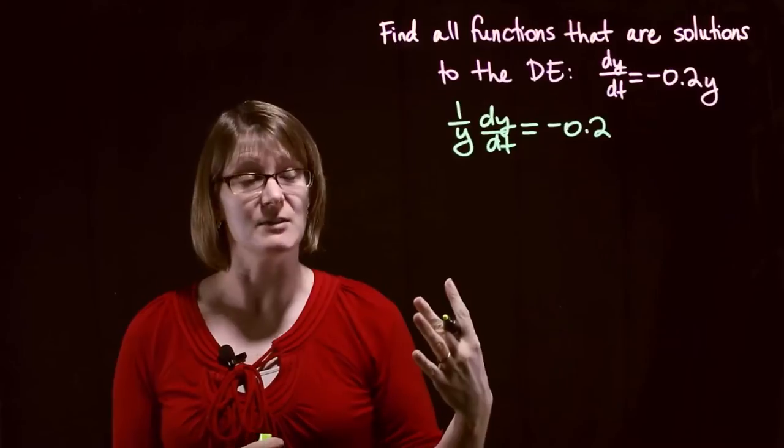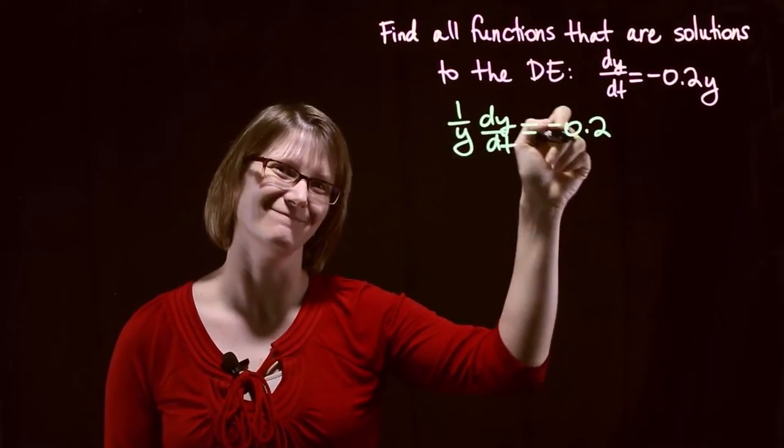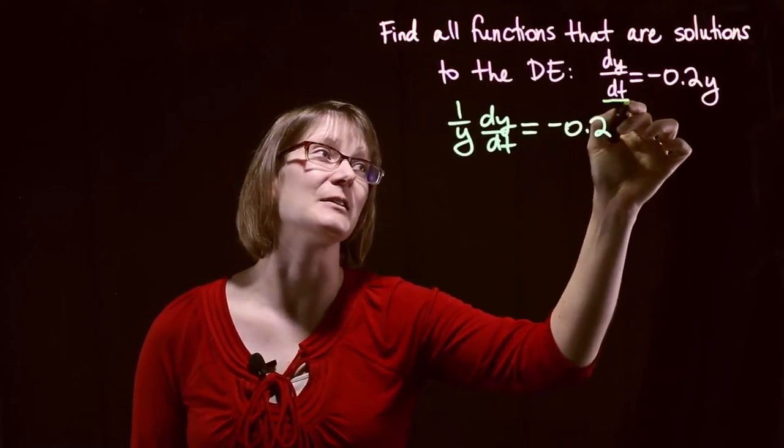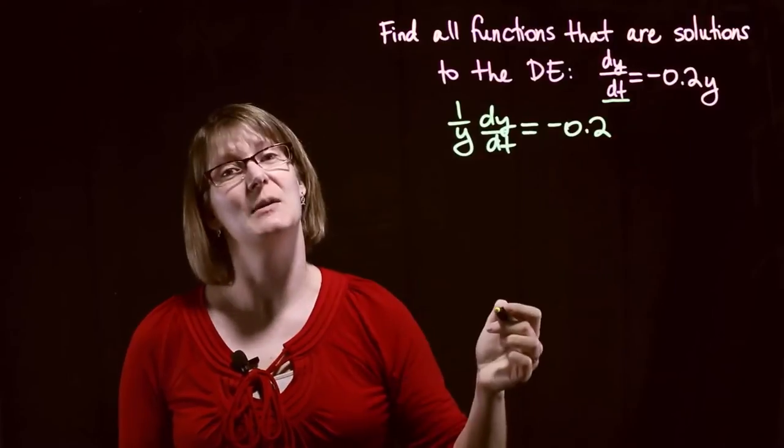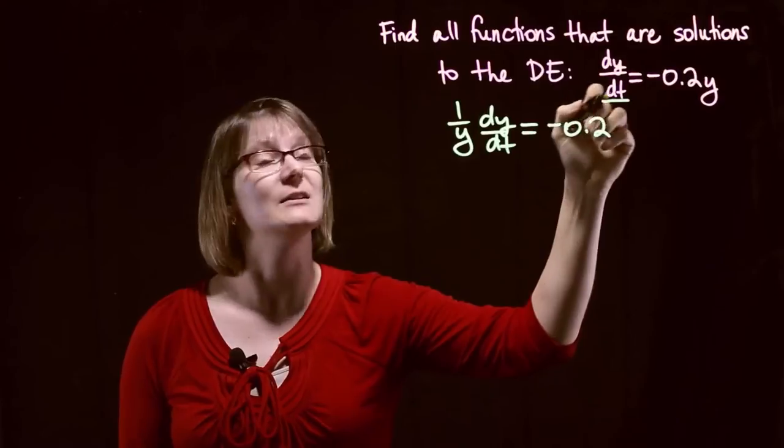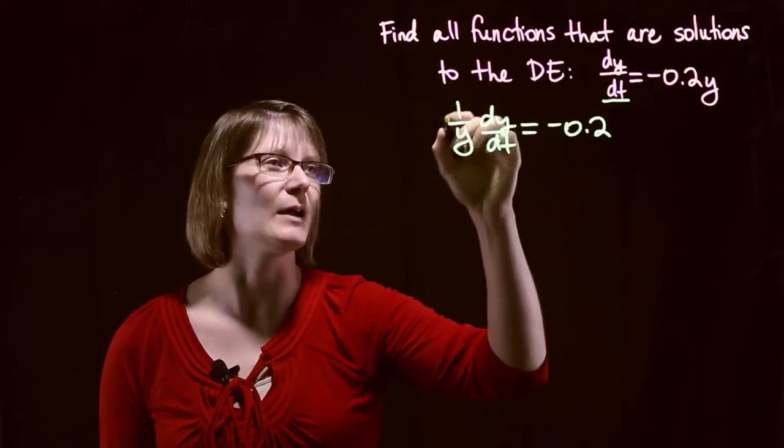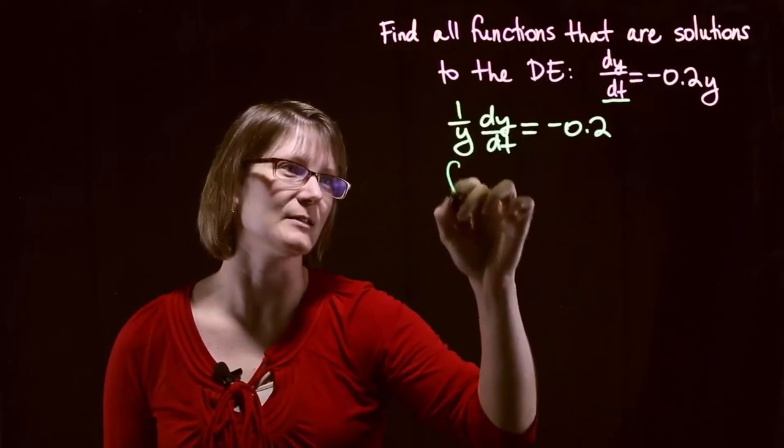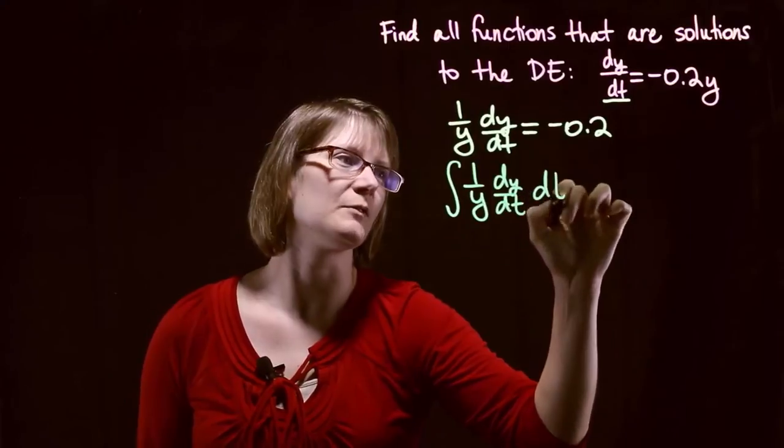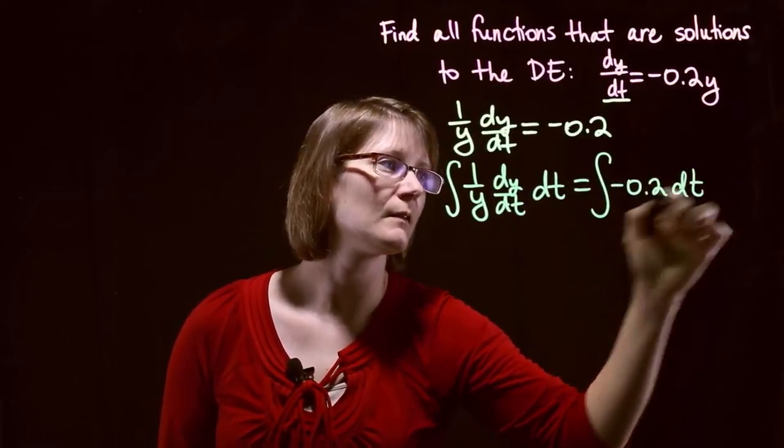Now what that allows us to do is we want to go ahead and integrate both sides with respect to, hmm, which variable? Well, that's the hard part. Actually it's not. If we take a look at this denominator we know we want to integrate both sides with respect to t, because that's going to be our independent variable for this particular problem. So let's go ahead and integrate both sides with respect to t.